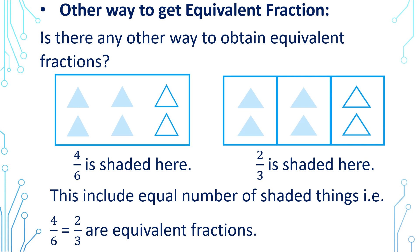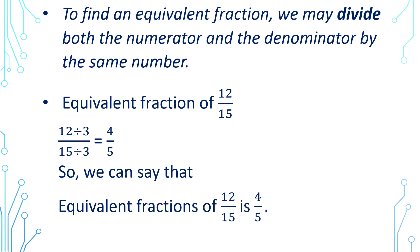Is there any other way to obtain equivalent fractions? In the first figure, out of 6 triangles, 4 triangles are shaded. In the second figure, out of 3 boxes, 2 boxes are shaded. These include equal numbers of shaded things, so 4 by 6 equals 2 by 3 — they are equivalent fractions. To obtain an equivalent fraction, you may also divide both the numerator and the denominator by the same number.